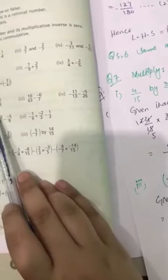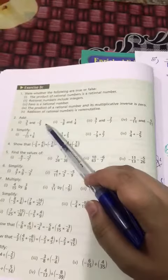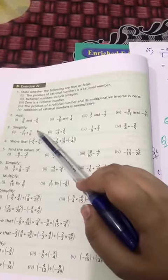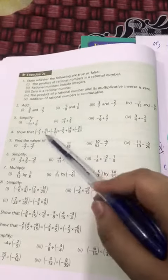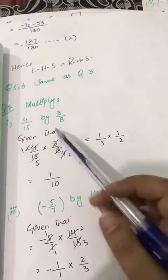Question number 5 and 6 same as question number 2 or 3, clear. Question number 7, multiply. Question number 7, 4 by 15 by 3 by 8, multiply.